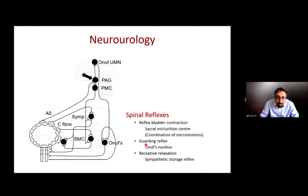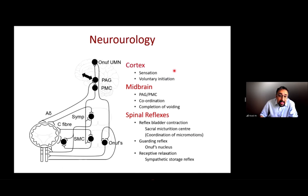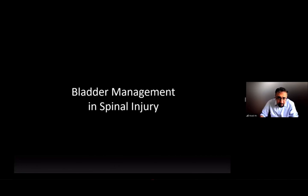Putting it all together: spinal reflexes include reflex bladder contraction controlled by the sacral micturition center, the guarding reflex from Onuf's nucleus, and receptive relaxation via the sympathetic storage reflex. At a slightly higher level, the periaqueductal gray and pontine micturition center coordinate everything for complete voiding. Finally, at the cortex we get the sensation of filling and voluntary initiation — social voiding.